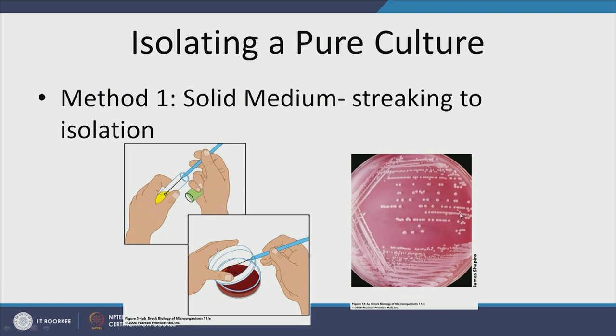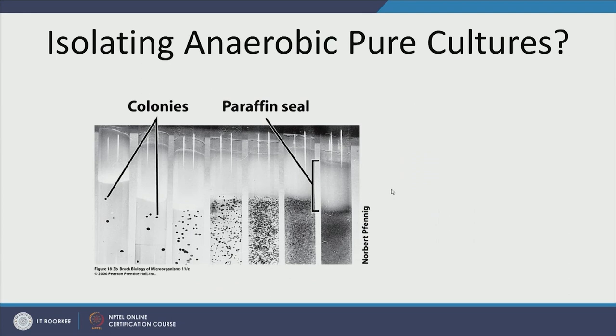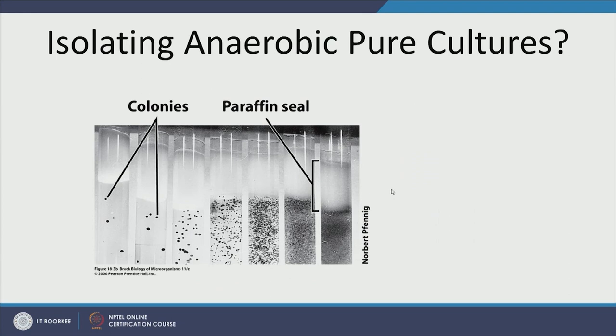For isolating anaerobic pure cultures, one approach uses a column with a paraffin seal so no air enters — each band represents a colony. A more popular technique uses an anaerobic jar: gas it with ultra-pure nitrogen or a nitrogen-hydrogen mix to remove oxygen, then place your Petri dishes inside and allow microbes to grow under anaerobic conditions. This works pretty well.